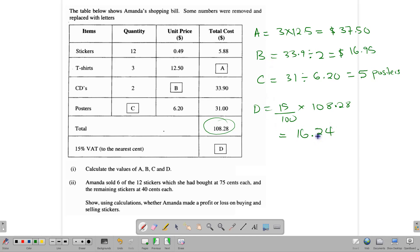Now the second part of the question says Amanda sold six of the 12 stickers which she bought for $0.75 each, and the remaining stickers for $0.40 each. So she bought 12 stickers for $5.88. And now she sells half the stickers for $0.75 and the other half for $0.40. Show using calculations whether Amanda made a profit or a loss on buying and selling the stickers.